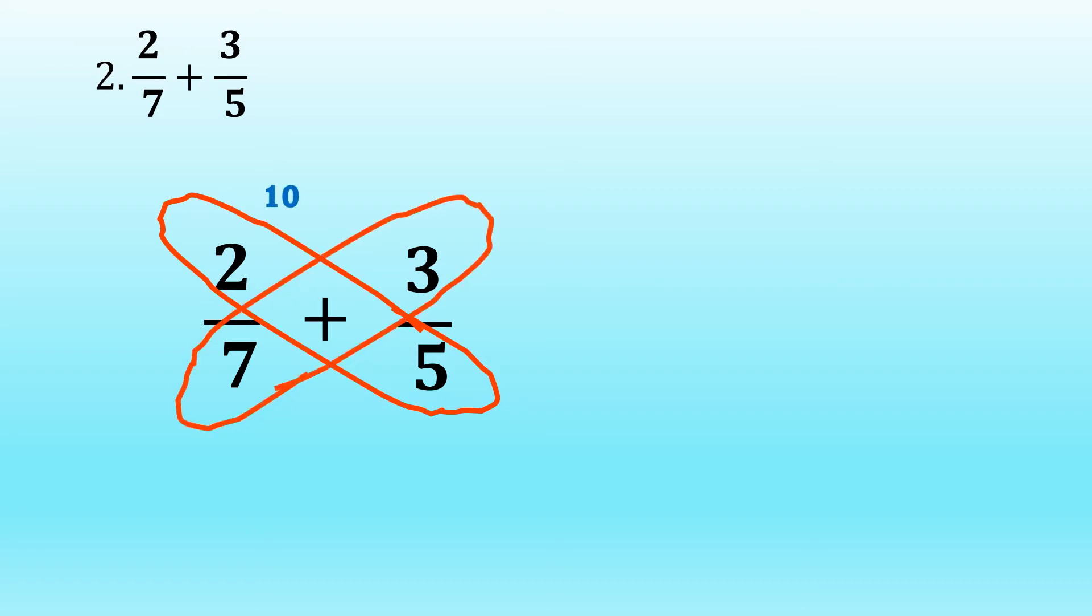The second example is two-sevenths plus three-fifths. Multiplying two and five to form the wings, so we get ten. And we multiply also seven and three, which is equal to twenty-one. The tail would be seven times five is equal to thirty-five. So, we have now our butterfly.